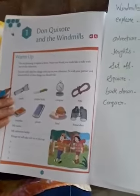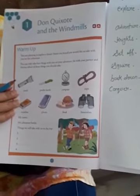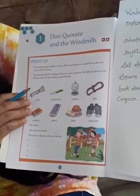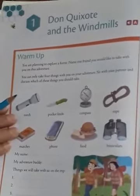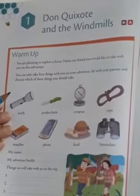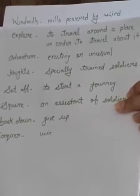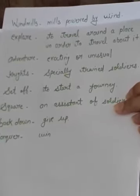Now come to the topic. First of all, students, see what's the name of the chapter. The chapter name is 'Don Quixote and the Windmills.' This is related to the character of Don Quixote and the windmills. Windmills means mills powered by wind — that is called windmills.